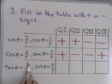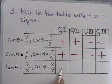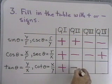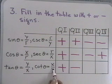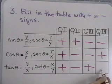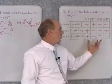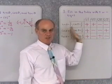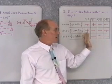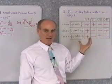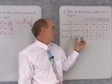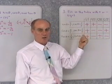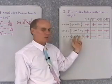For tangent θ, the ratio of y to x: in quadrant 1, both x and y are positive — ratio is positive. In quadrant 2, x is negative and y is positive — ratio is negative. In quadrant 3, both x and y are negative — ratio is positive. In quadrant 4, x is positive and y is negative — ratio is negative. By looking at the trig function and the quadrant in which θ terminates, we can determine the algebraic sign of any of the six trig functions.